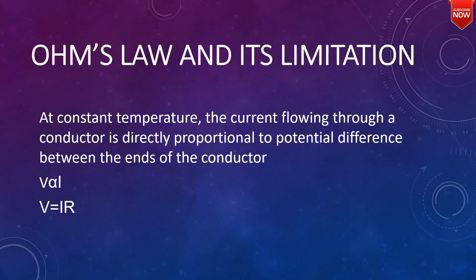Next, Ohm's law and its limitations. At constant temperature, the current flowing through a conductor is directly proportional to the potential difference between the ends of the conductor. V is proportional to I, so V = IR, where R is constant.